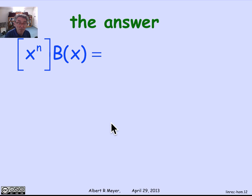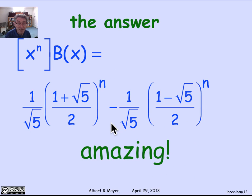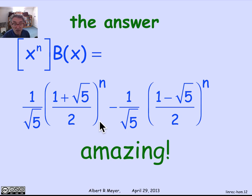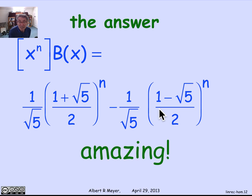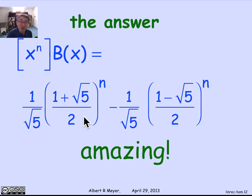Skipping the algebra, the punchline is the following remarkable formula: the coefficient of x to the n in the generating function b of x — that is, the number of rabbit pairs at the end of n months — is exactly 1 over root 5 times the quantity (1 plus root 5 over 2) to the n minus 1 over root 5 times (1 minus root 5 over 2) to the n. It's hard to believe this is always an integer, yet it is. This formula can be verified by induction using the recurrence; all the creativity lies in finding it.